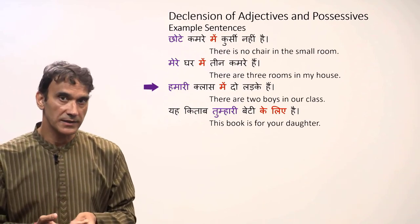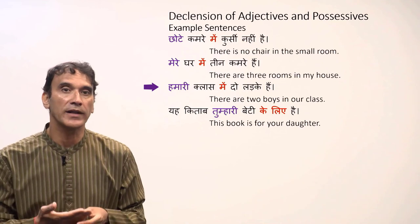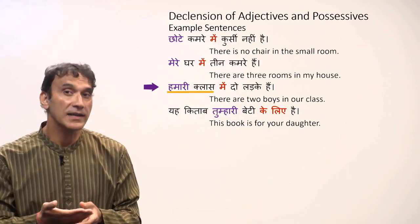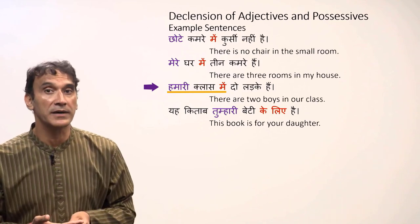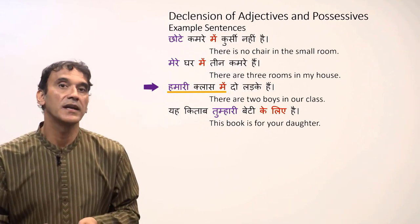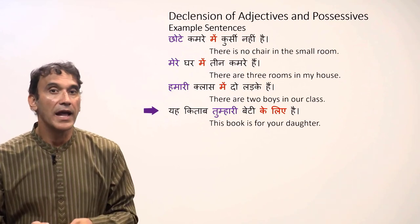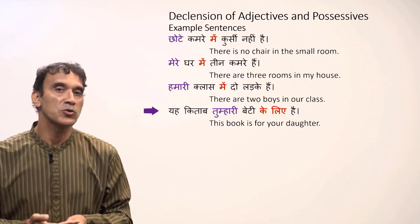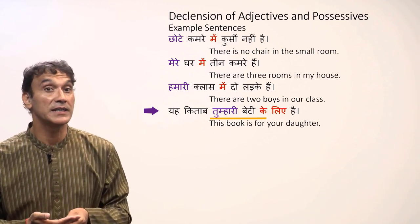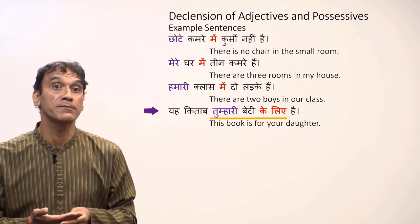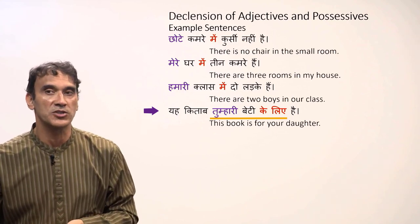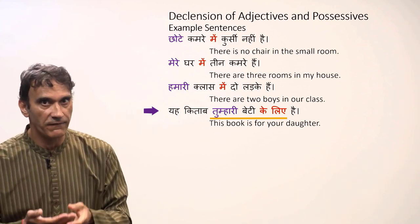'Hamari class mein do ladke hain' — there are two boys in our class. The noun 'class' is feminine and 'hamari' does not end in 'ā,' so it does not change: 'hamari class mein.' The final example: 'Yeh kitab tumhari beti ke liye hai' — this book is for your daughter. 'Tumhari beti' is feminine, so the possessive does not end in 'ā' and stays the same with the postposition: 'tumhari beti ke liye.'